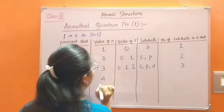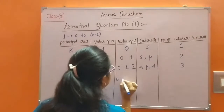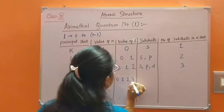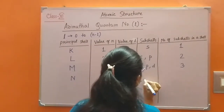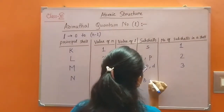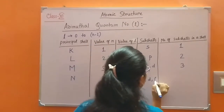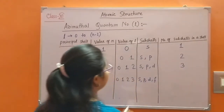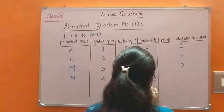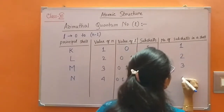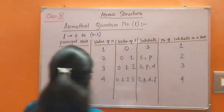For N shell, value of N is 4, value of L is 0, 1, 2, 3. Sub-shells are S, P, D, and for L equals 3, F sub-shell. So number of sub-shells is 4 — that is, four sub-shells in the N shell.